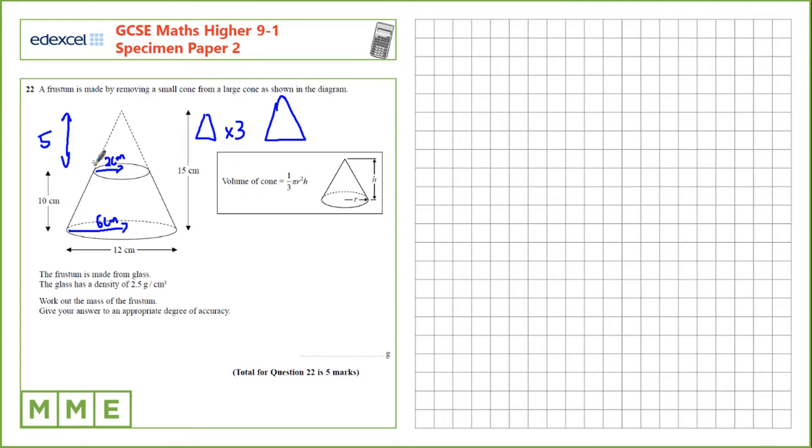First let's find the volume of the large cone. So, I'll call that VL, and that's a third times pi times the radius squared, which is 6 squared, times the height, which is 15, and that gives us 180 pi. I'll leave it in terms of pi for now because it'll make our calculations more accurate later on.